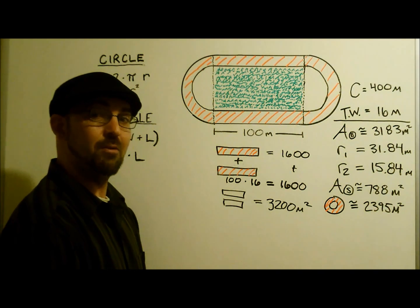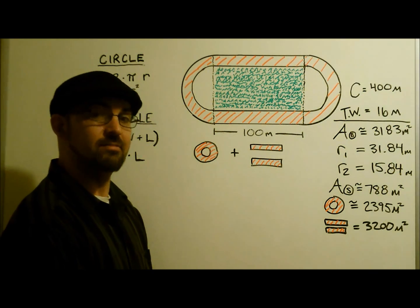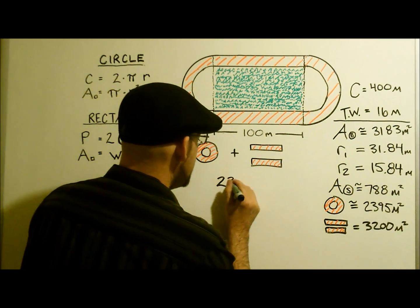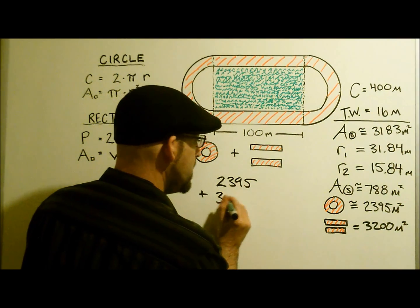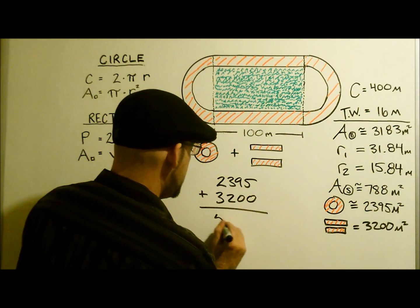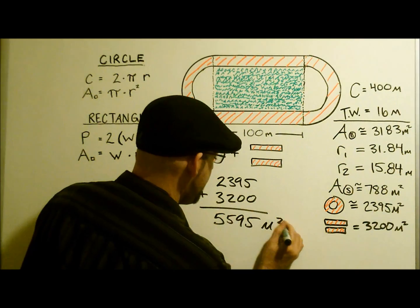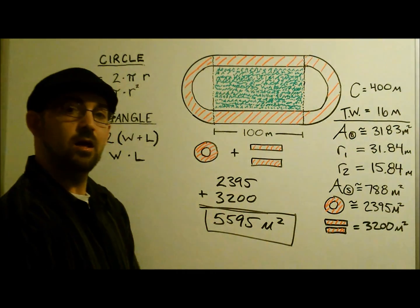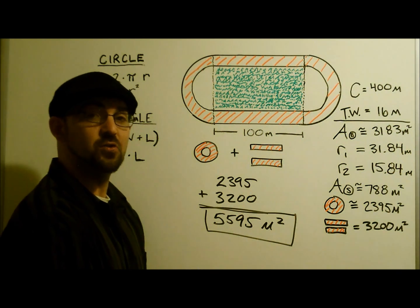We're not quite done yet. Now we have to add them together. Ready to find out the area of the entire track? We have 2395 meters squared, and just add that to 3200 meters squared. For the entire track, we end up with 5,595 meters squared.